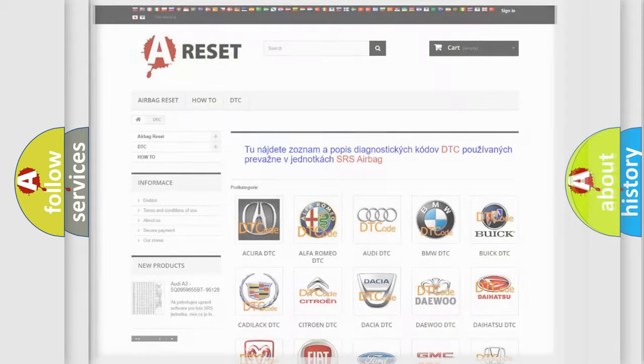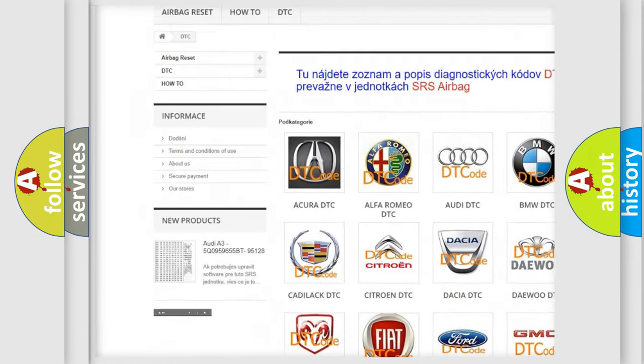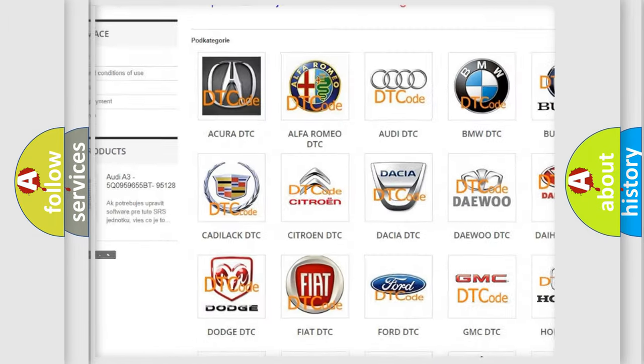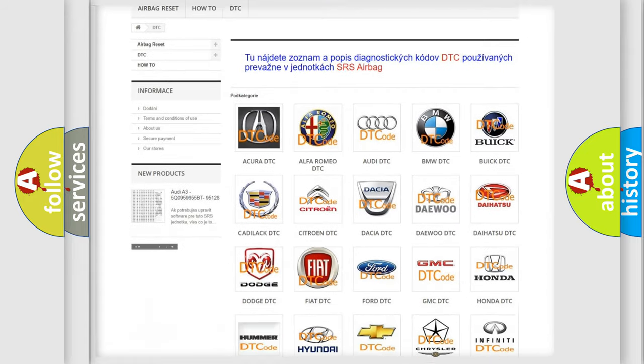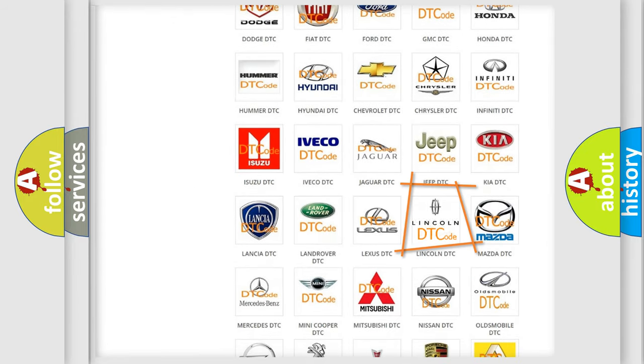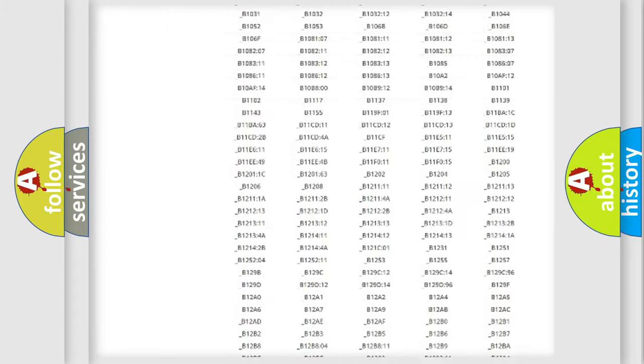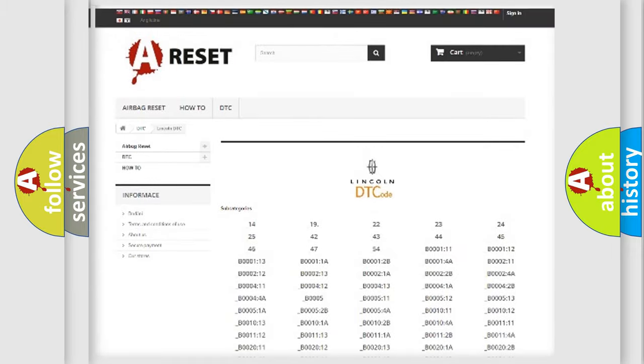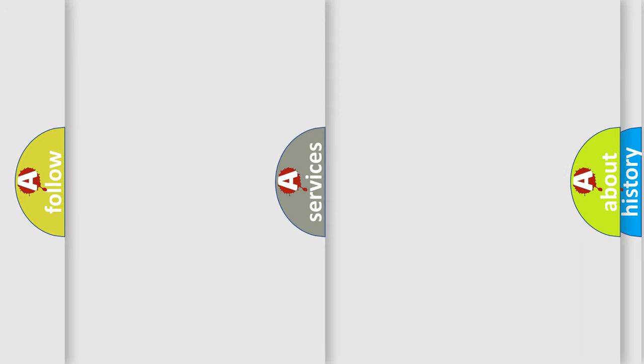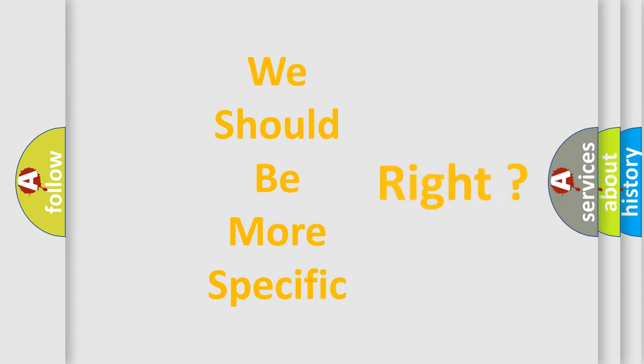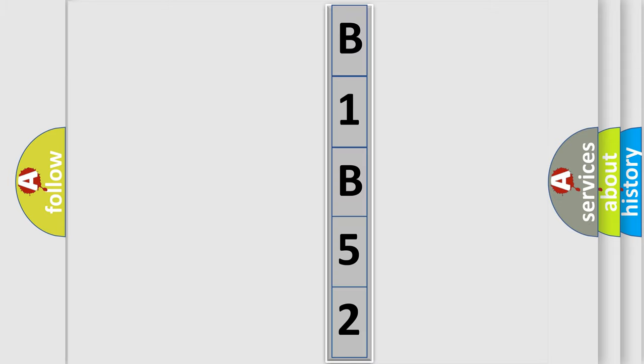Our website airbagreset.sk produces useful videos for you. You do not have to go through the OBD2 protocol anymore to know how to troubleshoot any car breakdown. You will find all the diagnostic codes that can be diagnosed in Lincoln vehicles, and many other useful things. The following demonstration will help you look into the world of software for car control units.